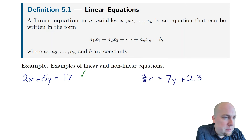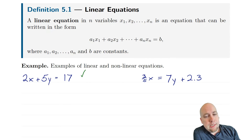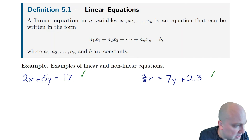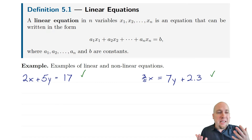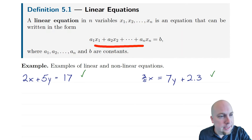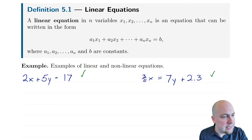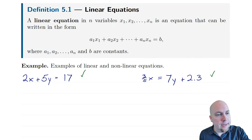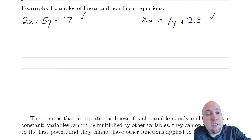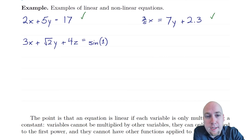Next example: three-fifths times x equals 7y plus 2.3. Is that a linear equation? Yes, it is, just written in a slightly different form. You might be concerned that 7y is on the right-hand side instead of the left, but that doesn't matter. The point is the equation can be written in the standard form — just subtract 7y from both sides to move it over. So yes, it's linear.